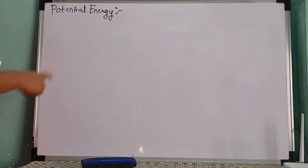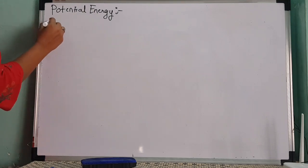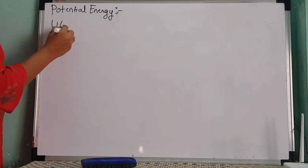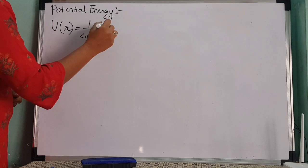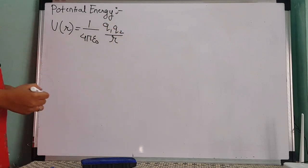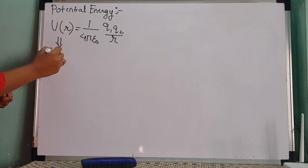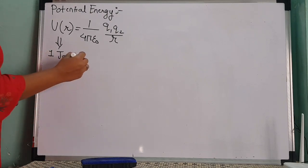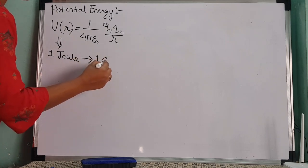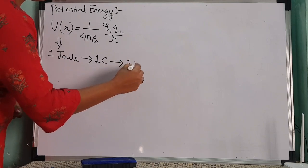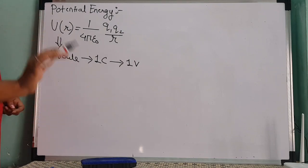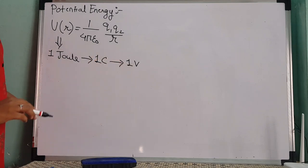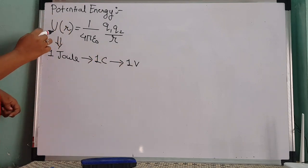Last time we saw the expression for potential energy, given by U at distance R equals 1 upon 4 pi epsilon-naught times Q1 Q2 upon R. The unit of this potential energy is Joule. One Joule can be defined as the work done to bring 1 coulomb of charge through a potential difference of 1 volt.